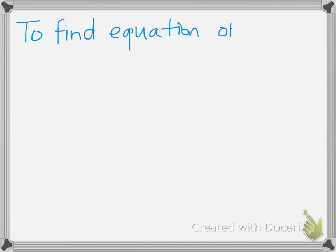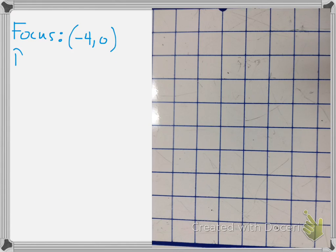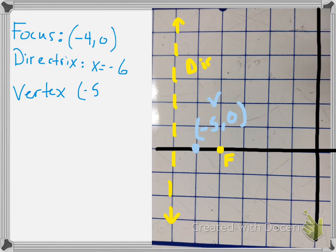The last part of the review is finding the equation with given information. For a parabola, you need two things: your vertex, which can be found using the midpoint formula or by graphing, and p. If we're given the focus at (-4, 0) and the directrix at x equals negative 6, we need to find the vertex. Looking directly in the middle, the point at (-5, 0) is the midpoint. We can confirm this by adding negative 4 plus negative 6 to get negative 10, then dividing by 2 to get negative 5. So the vertex is at (-5, 0).